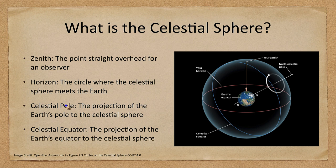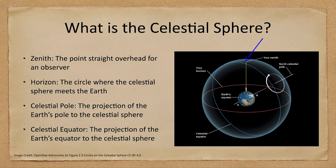The zenith is the point straight overhead. We have an observer here, and the zenith is that point directly overhead for that observer — it is different for every observer. What is overhead for a person in one location is not going to be overhead for a person at another location. Similarly, the horizon is where the celestial sphere intersects. You can see what is above the horizon, and you cannot see anything below it. That also depends on where you are located.